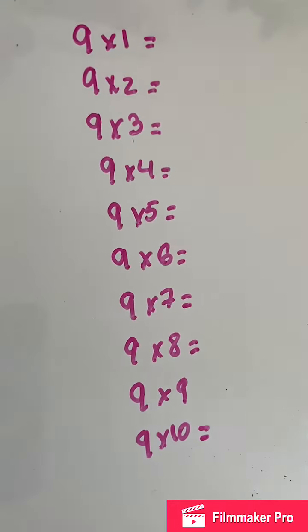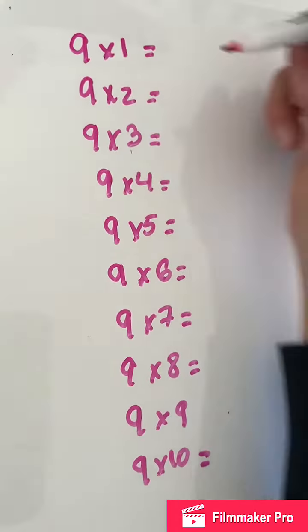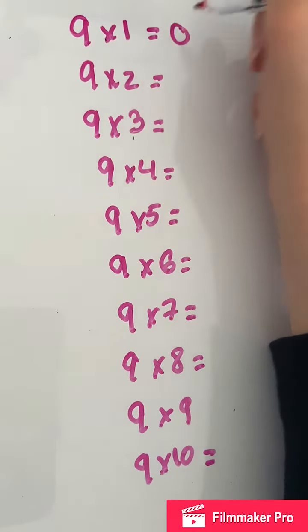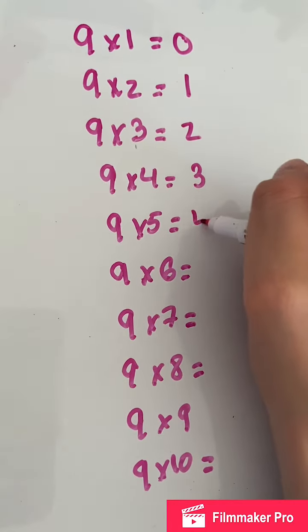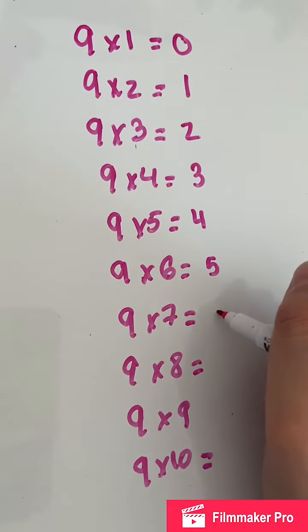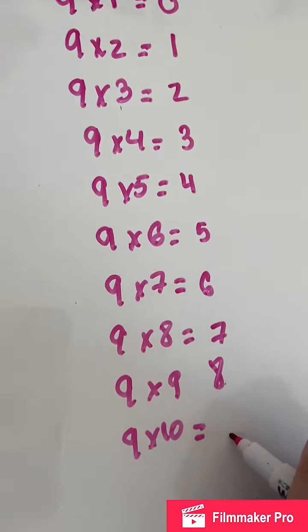So first what we're going to do is start off with the number zero from the top to the bottom. And go in order: zero, one, two, three, four, five, six, seven, eight, then nine.